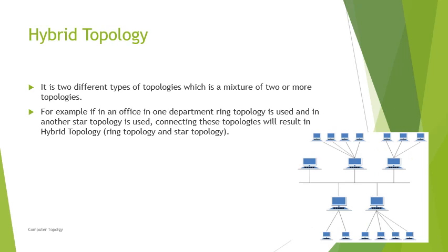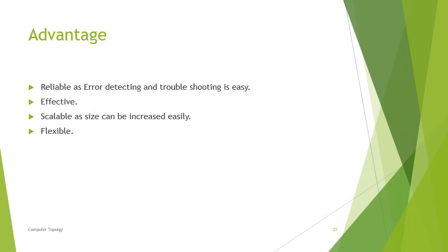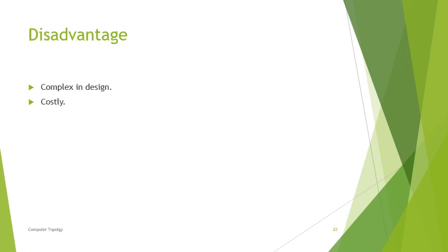Hybrid topology is a combination or mixture of two or more topologies, and is used in many organizations. For example, one department may follow ring topology while another uses star topology; connecting these requires hybrid topology. Advantages: it is reliable, since error detection and troubleshooting are easy, and it is effective, scalable, and flexible. Disadvantages: it is costly and the design is very complex.